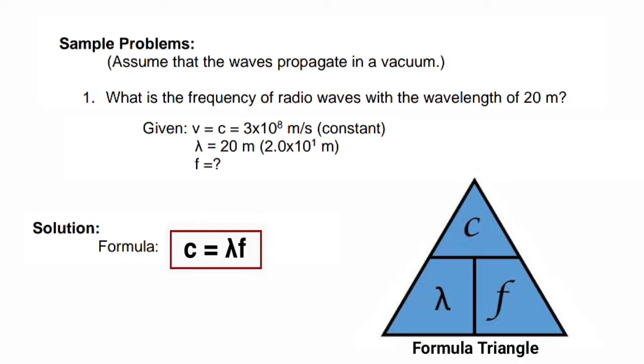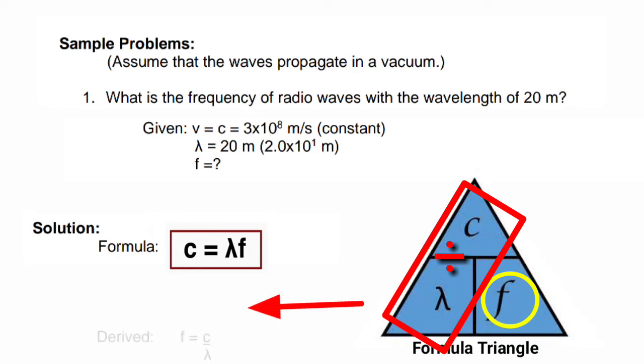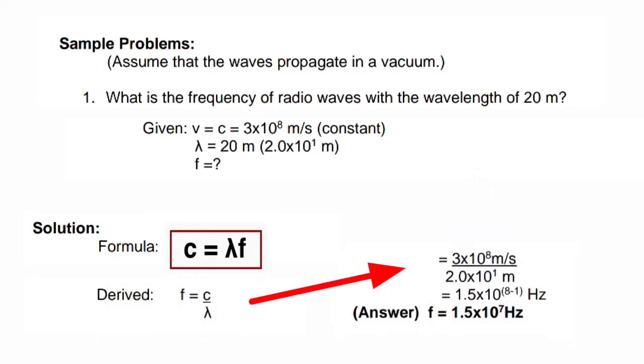Since the formula or the wave equation is c equals wavelength times frequency, we have to derive first a formula in order to solve for the value of the frequency. In deriving formulas, we can use the formula triangle. In here, we place the variables of the wave equation inside the triangle with c in the top part and the λ and frequency in the other corners. If you are looking for the value of the wavelength, the frequency is placed below in the triangle with c on top, which means it is division. You will also do the same if you are looking for the frequency. We divide c with wavelength, so this will be the formula that we are going to use in solving the problem.